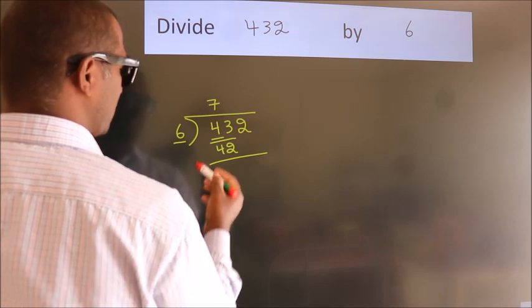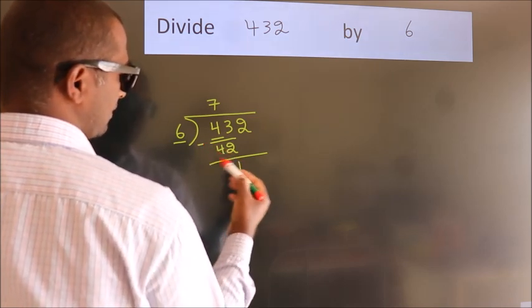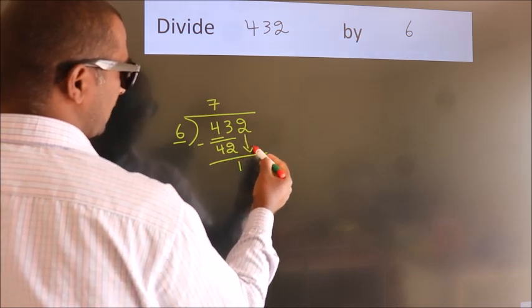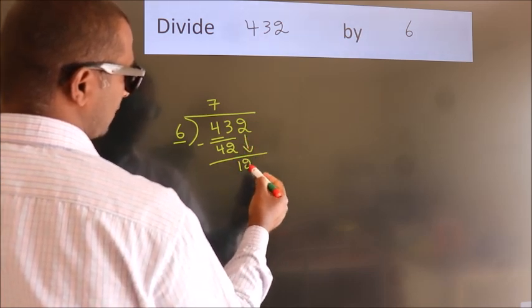Now we should subtract. We get 1. After this, bring down the next number. So 2 down, which gives us 12.